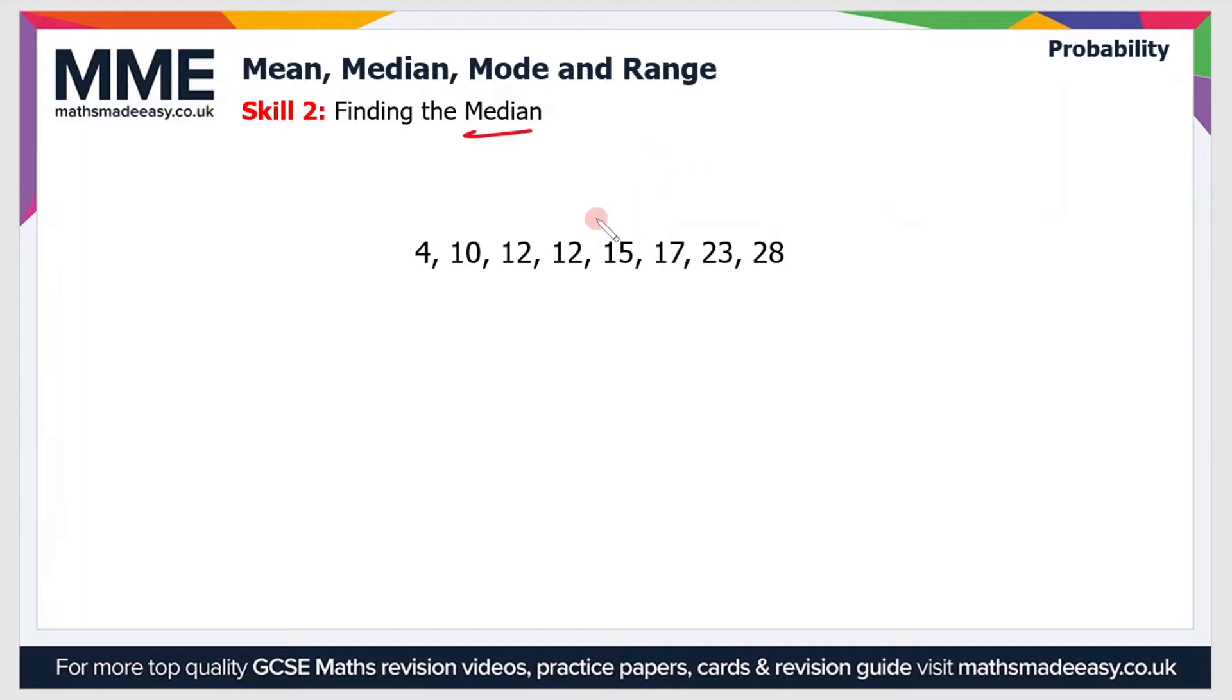where is the middle point in this set of numbers? Well, there's 8 numbers, so the middle point, if we divide the set so that there's 4 numbers on each side, we can see that the middle point is between the value 12 and the value 15.